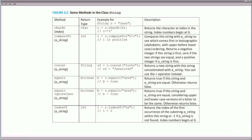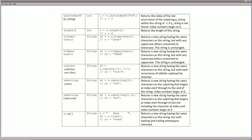indexOf returns a type integer — it is the index of the first instance of whatever the argument is. So if we pass in 'va', the index of this starts at 0, 1, 2. We also have dot length, which gives you the number of characters found inside of this string — very useful to process information. From there, toLowerCase and toUpperCase respectively lowercase or uppercase all the characters in a string.